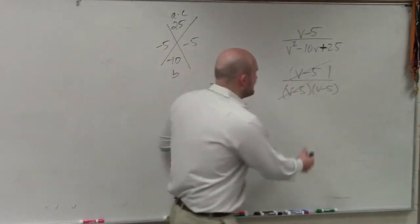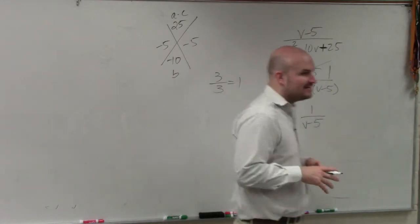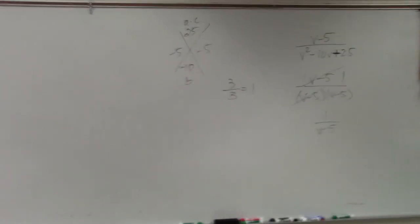So therefore, my final answer is 1 over v minus 5. Now, you can't simplify it.